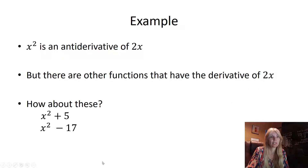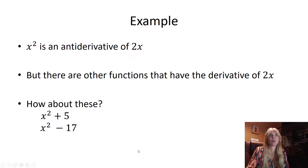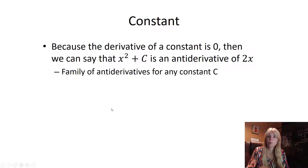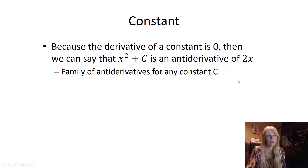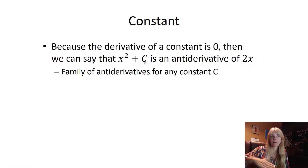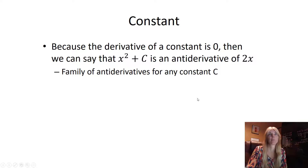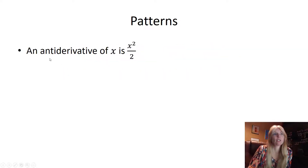There are other functions that have the same derivative 2x. For example, the derivative of x² + 5 is 2x, and the derivative of x² − 17 is also 2x, because constants disappear. So we say there's a family of antiderivatives, and we write plus C for any constant, since we don't know which one it is. This is just like translating a function up or down.